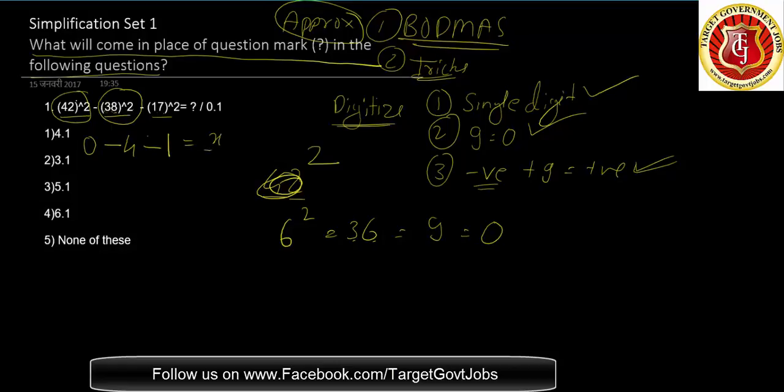Which equals something upon 0.1. Don't consider the decimal - 0 plus 1 is 1, so 1 will shift here. Anything multiplied by 1 gives the same number, so minus 4 minus 1 is minus 5 equals x.